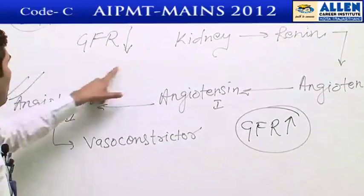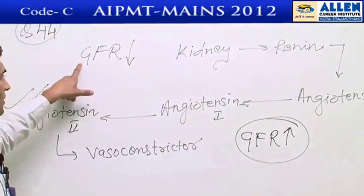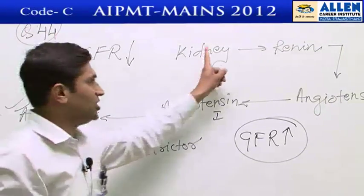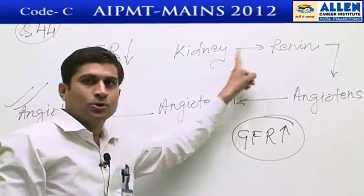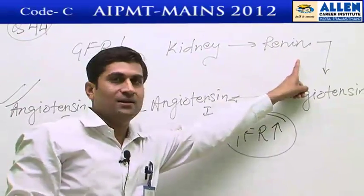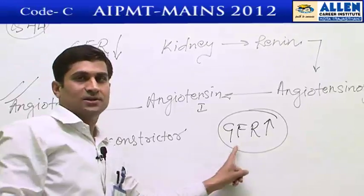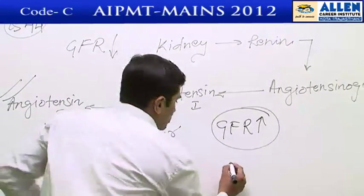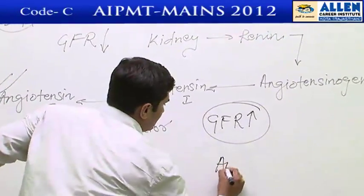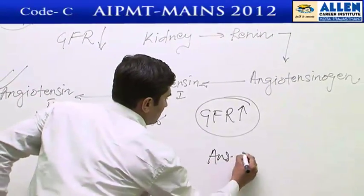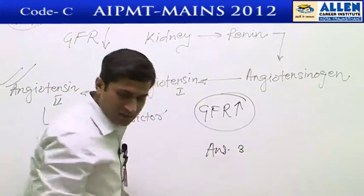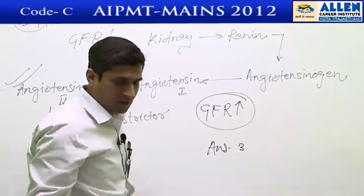To summarize: the fall of GFR activates JG cells to release renin, and GFR increases. So the answer is option number three.